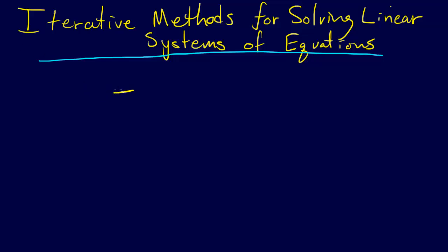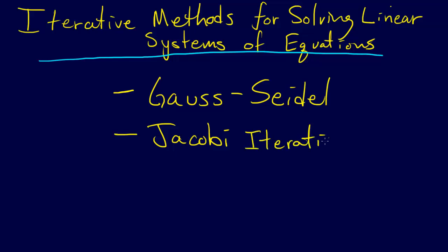In particular, we're going to talk about two different iterative methods: Gauss-Seidel and Jacobi. It may be called Gauss-Seidel iteration or Gauss-Seidel method, but it's almost always called Jacobi iteration. These are two different iterative methods for solving linear systems of equations that we're going to introduce.